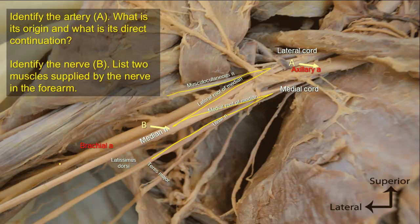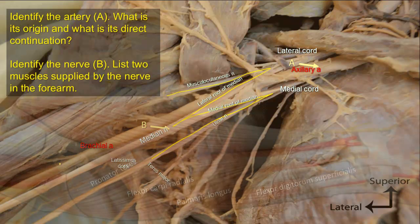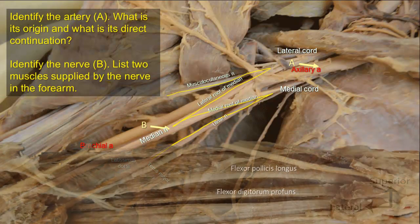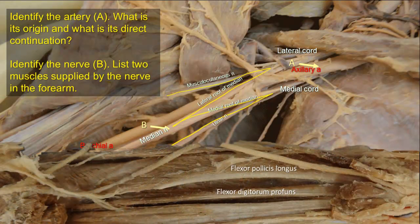The median nerve supplies nothing in the axilla and nothing in the arm. In the forearm, it supplies the flexor group of muscles — specifically pronator teres, flexor carpi radialis, palmaris longus, and flexor digitorum superficialis. It also has a branch called the anterior interosseous nerve that supplies flexor pollicis longus, pronator quadratus, and the lateral half of flexor digitorum profundus.